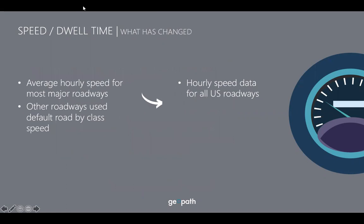To recap speed and dwell time within our current methodology: hourly data is utilized for all U.S. roadways, as opposed to using average hourly speed data for most major roadways in our previous models. That's a major shift.